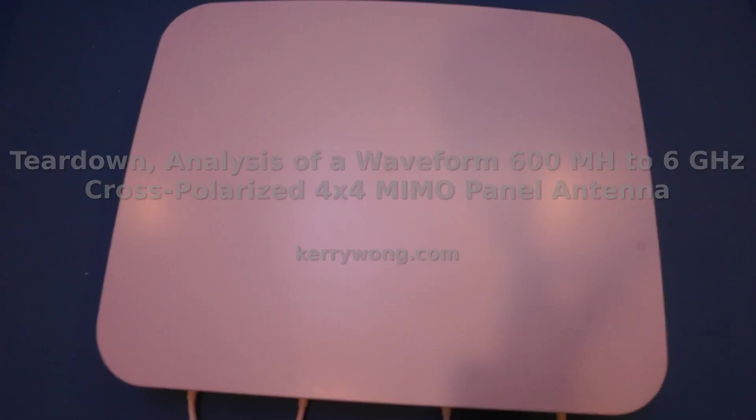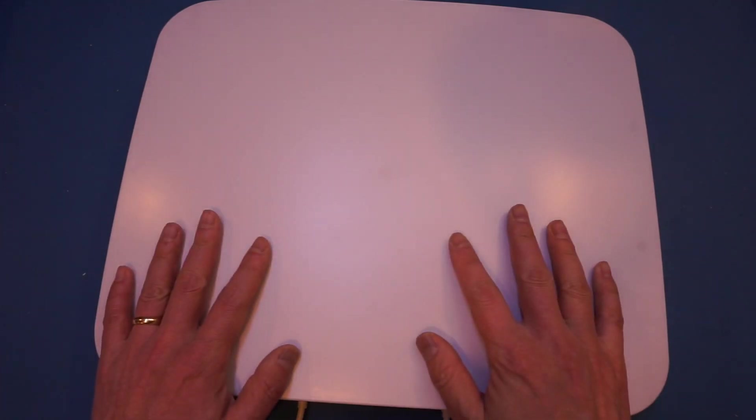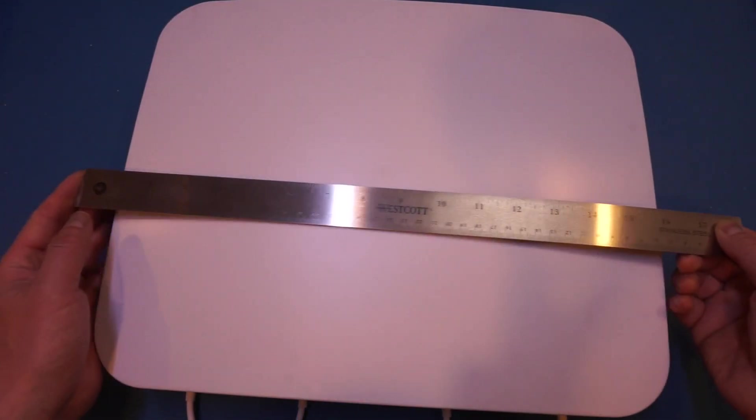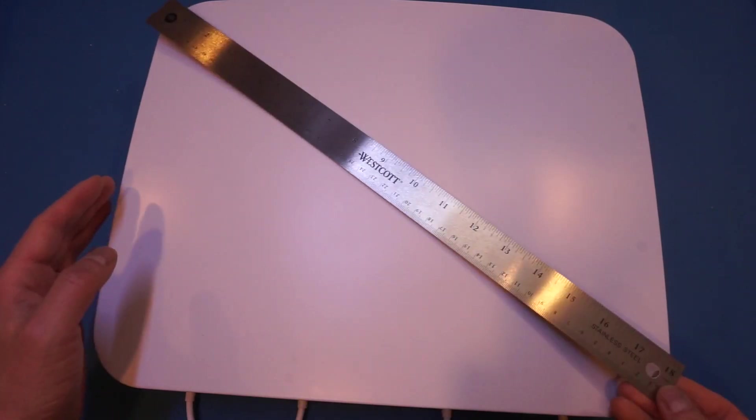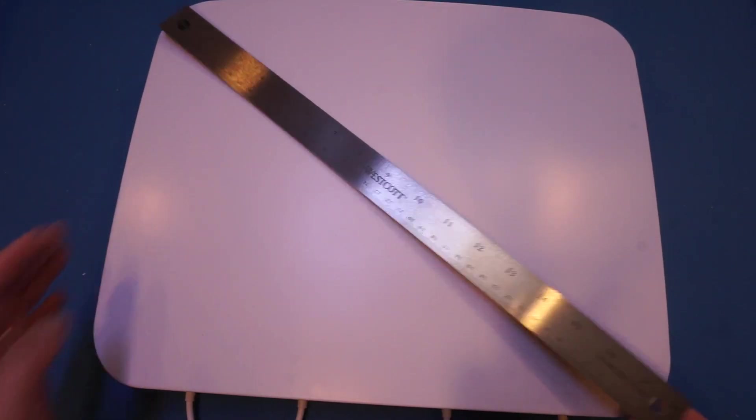Hi, in this video we'll take a look at a 600 MHz to 6 GHz 4x4 panel antenna. This thing is massive. Just to get you an idea, here is my 18-inch ruler and you can see that diagonally it measures just above 18 inches.